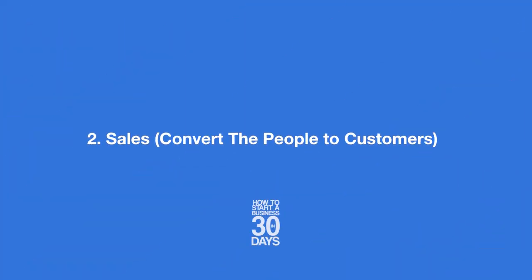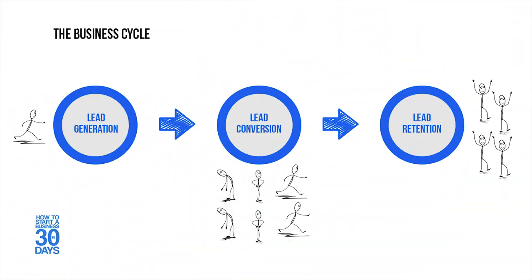The next part is sales. This is where we take the marketing efforts and convert them into customers. This could mean getting on the phone to sell somebody, or it could be your advertising sales copy that brings a person to a page and converts them into a lead. Lead conversion relates to sales — when somebody comes into the funnel, how are you going to convert them? You might build a sales team. Strengthening each part of your business helps you understand how to grow.